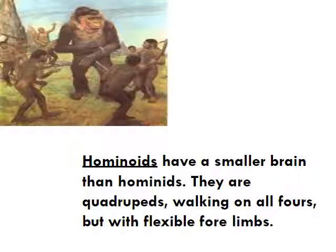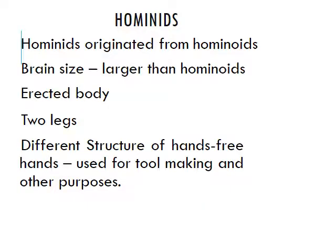From hominoids we came to hominids. Hominids originate from hominoids with a larger brain size, erect body on two legs, and a different structure of hands. Their hands were free for tool making and other purposes. As they were erect, they could see farther away and detect danger or food from a distance, which gave them an upper hand over hominoids.